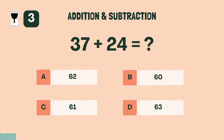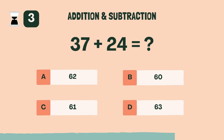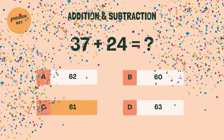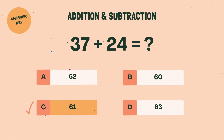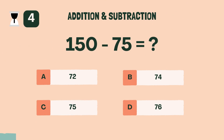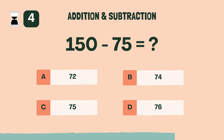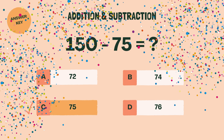What is 37 plus 24? C, 61. What is 150 minus 75? C, 75.